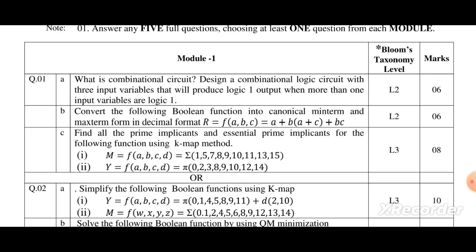The second question asks to write the Boolean function into canonical minterm and maxterm in decimal format, and find all the prime implicants and essential prime implicants for the following function.